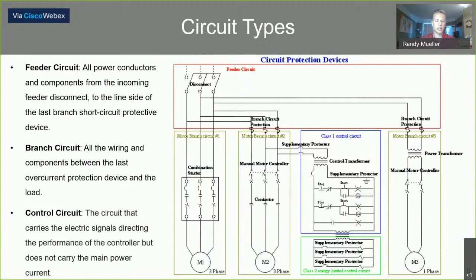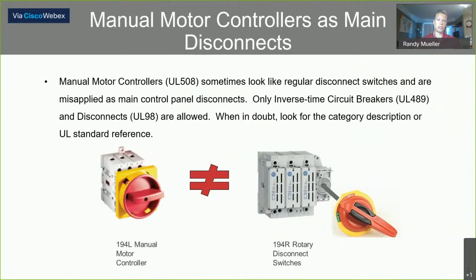Within control circuits there are varying classes — Class 1 and Class 2. Class 2, specifically, is what we'll go into more detail on today — energy-limiting circuits. Now that we have that reviewed, I'm going to jump into the first of our misapplications, or commonly seen mistakes in a panel.